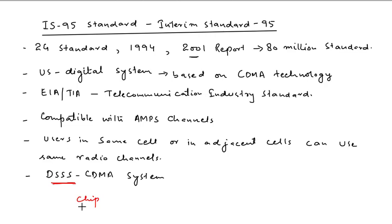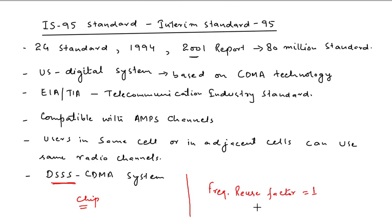The message bits modulated by the pseudo-random bit sequence are known as spreading sequences, and each bit in the spreading sequence is called a chip. There is use of specific modulation and spread spectrum techniques in both the forward and reverse links. Because the same set of frequencies is used in the same cell and adjacent cells, the frequency reuse factor here is 1.